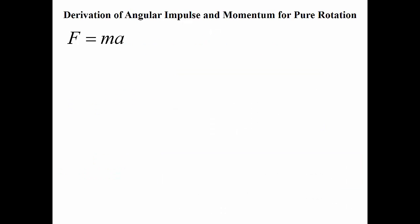So what happens when we have a rigid body? First, let's look at impulse and momentum for pure rotation of a rigid body. If we take our equation — force equals mass times acceleration — and look at it for an object that's rotating, we've already established that a moment is equal to our mass moment of inertia times an angular acceleration.